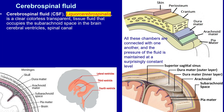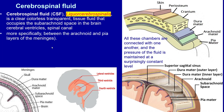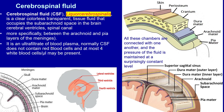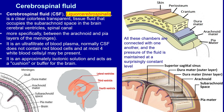CSF is found in the cerebral ventricles, spinal canal — more specifically between the arachnoid and pia layers of the meninges. It is an ultrafiltrate of blood plasma. Normally CSF does not contain red blood cells, and at most four white blood cells per microliter may be present. It is an approximately isotonic solution.